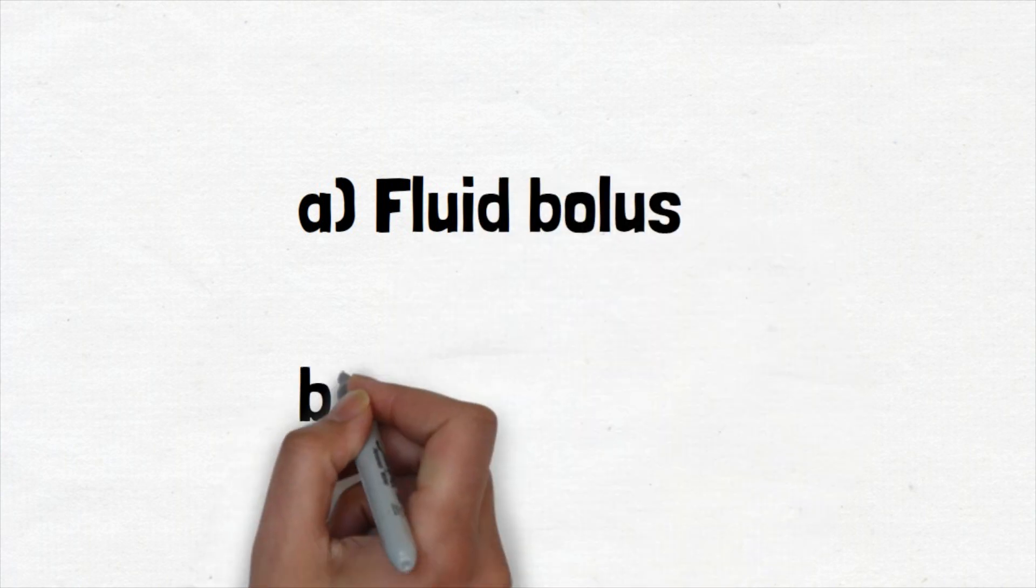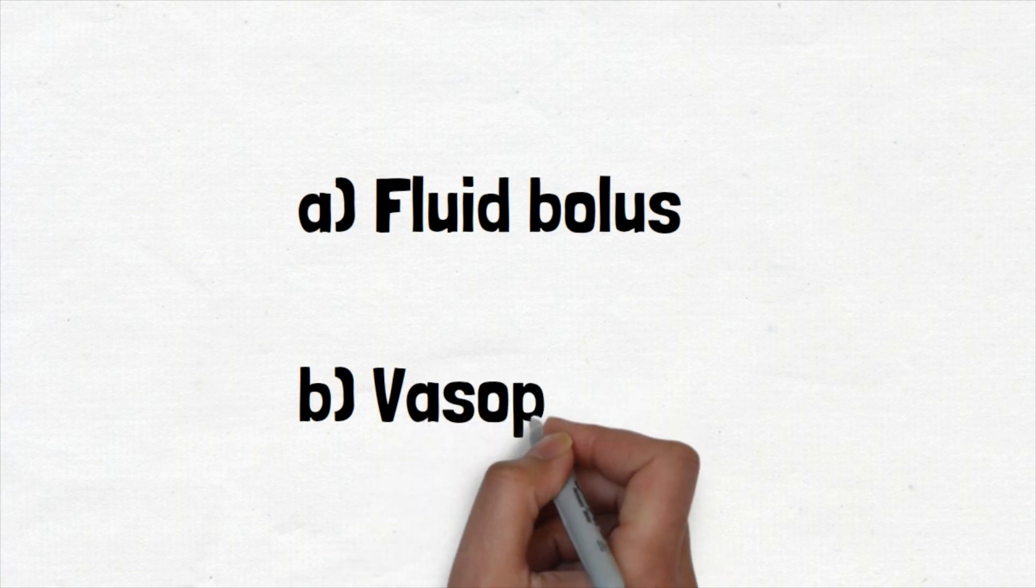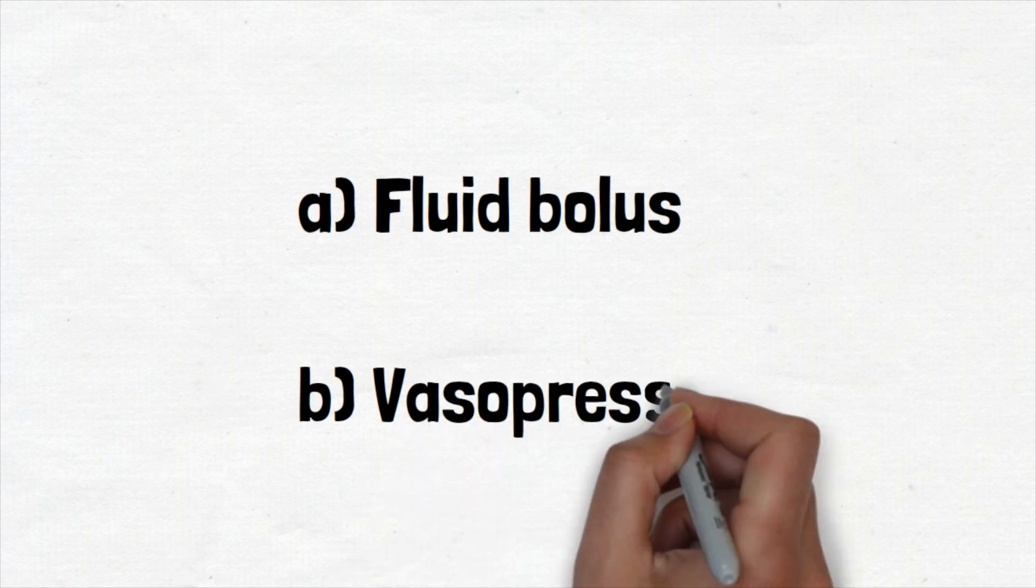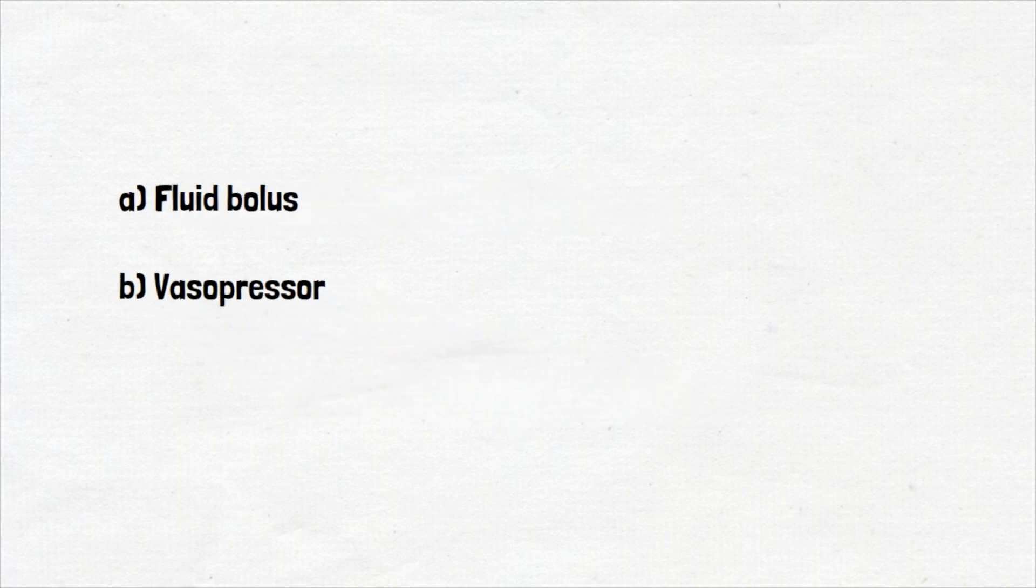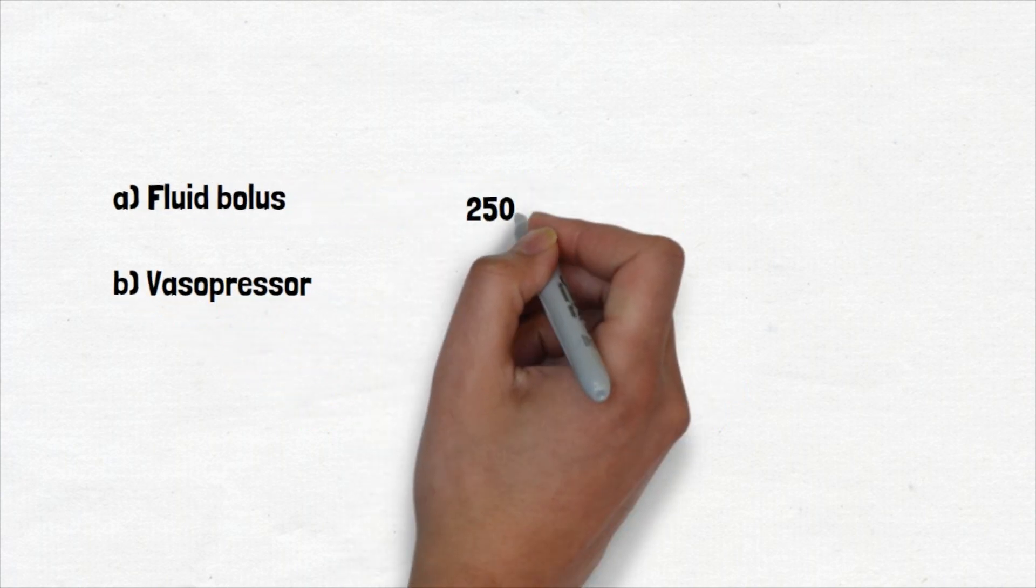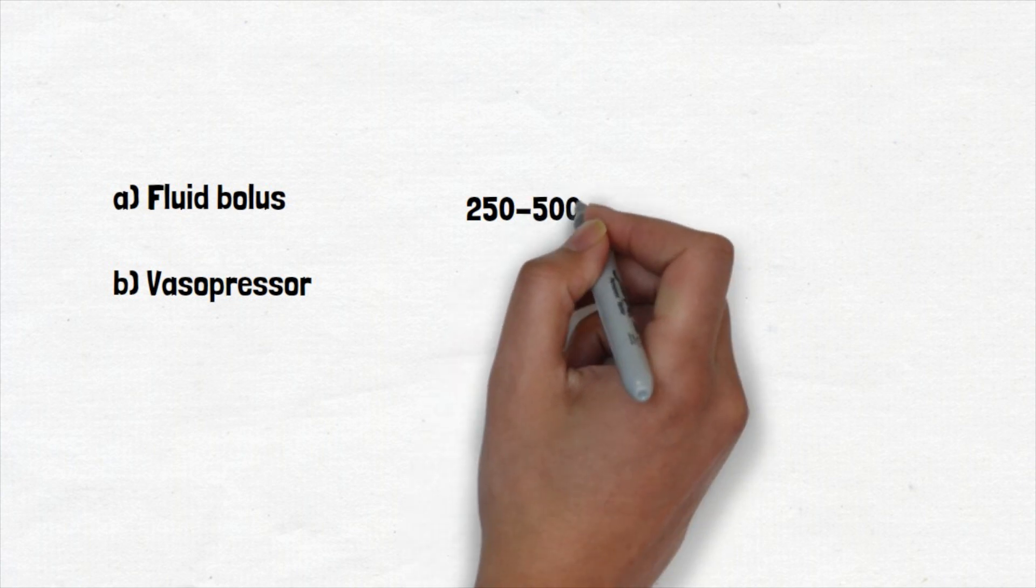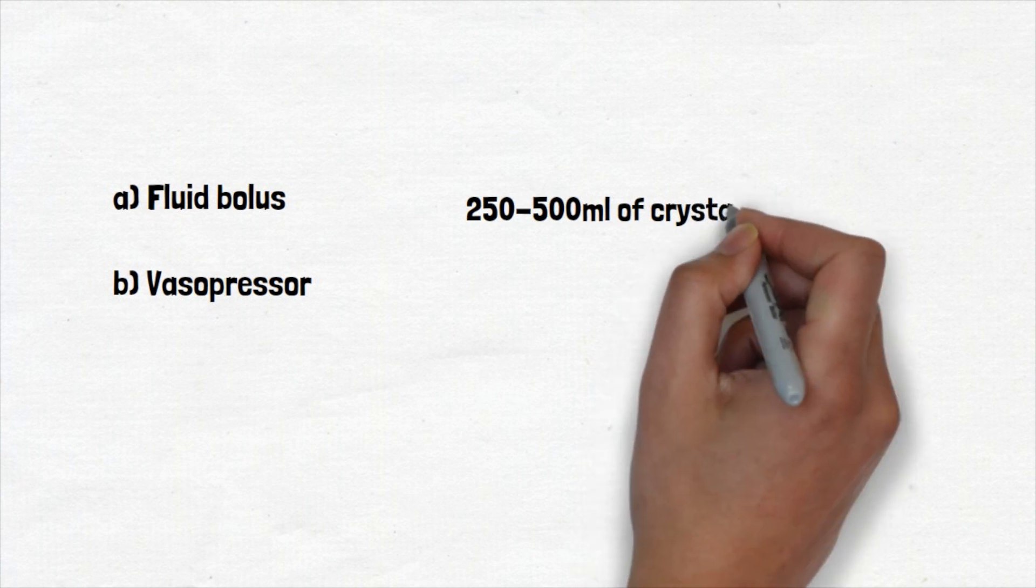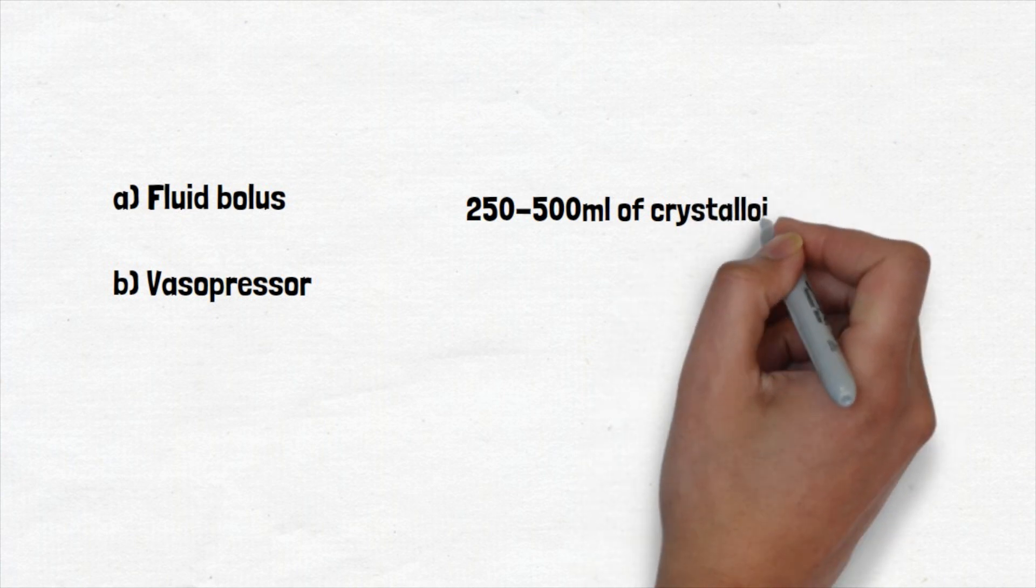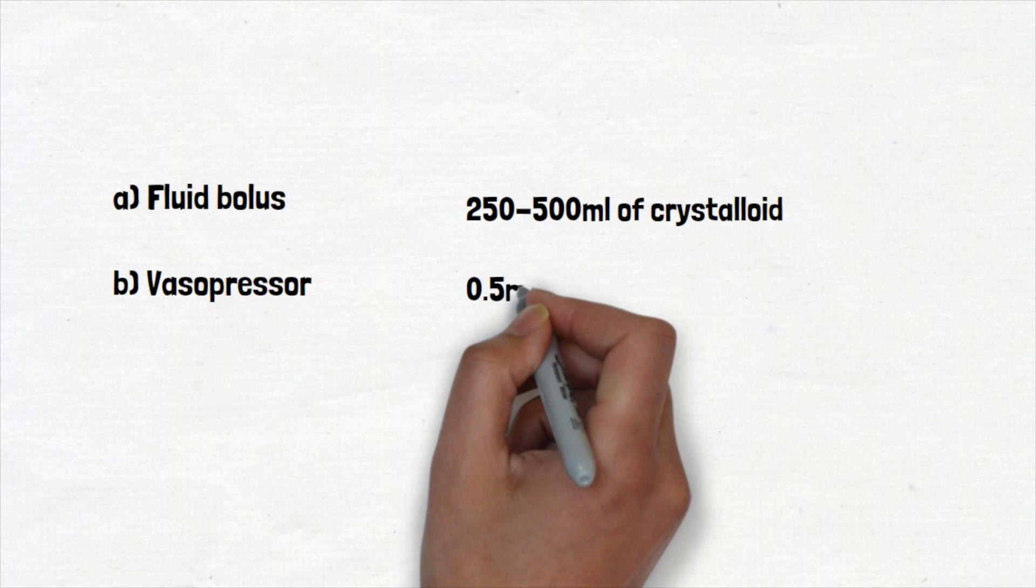For hypotension, the initial steps are giving (a) a fluid bolus and (b) vasopressor. Giving a fluid bolus could be infusing 250 to 500 mls of fluid depending on the patient, often normal saline or crystals such as Hartmann's. If fluid isn't available quickly, simply lifting the patient's legs at 45 degrees in the air can be a way to immediately transfer peripheral volume into the central area.